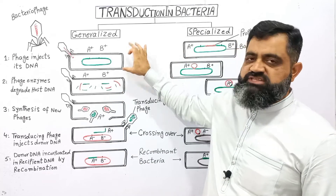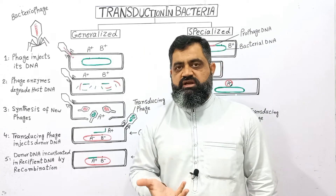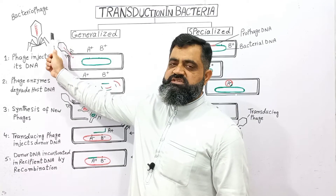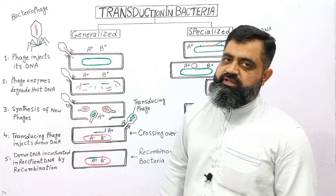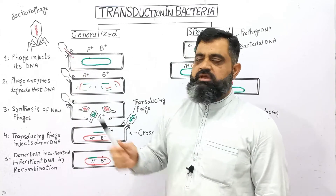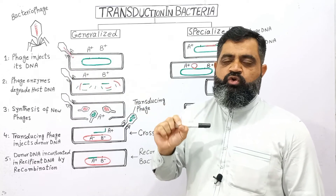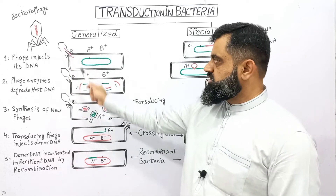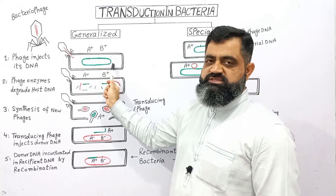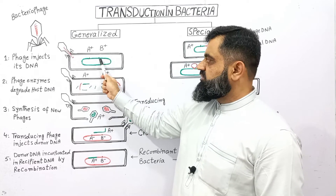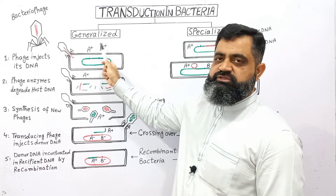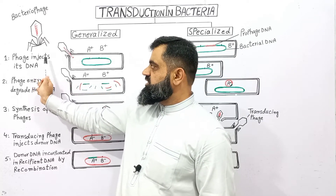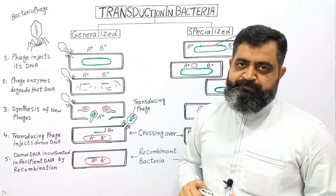This is the bacterium known as E. coli, which usually resides in our intestinal tract, known as the gut, where it reproduces and can produce intestinal infections. In the first step, a bacteriophage attacks on the surface of the bacterium. With help of an enzyme known as lysozyme, it makes a tiny hole inside the wall or membrane of the bacterium and injects its DNA into the body of the bacterium. This E. coli cell has its chromosome shown in green color, labeled as A positive and P positive for clarity. The first step of transduction is: phage injects its DNA into the body of the bacterium.